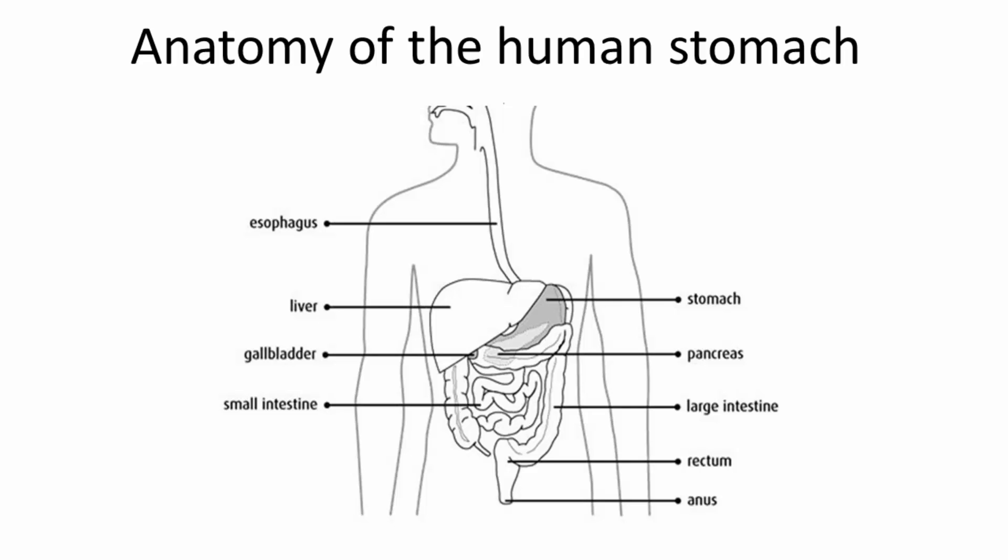Anatomy of the human stomach. The stomach is a muscular, J-shaped organ located in the upper part of the abdomen. It is part of the digestive system that extends from the mouth to the anus. The shape of the stomach varies from person to person and also from meal to meal.